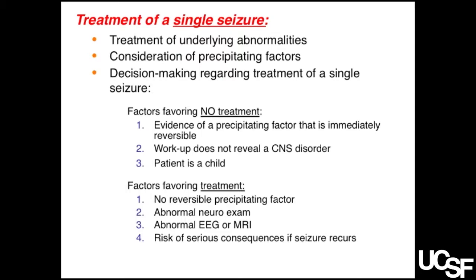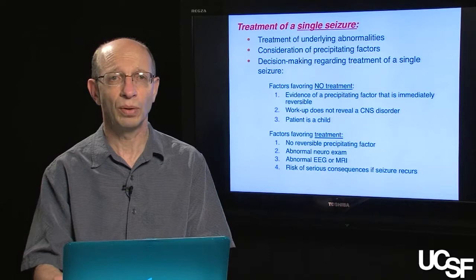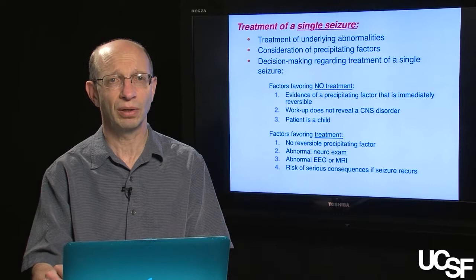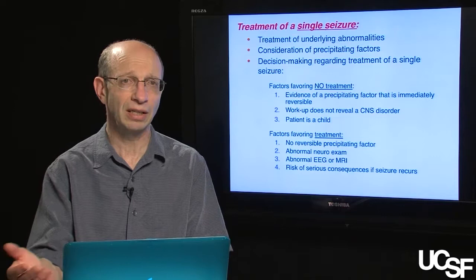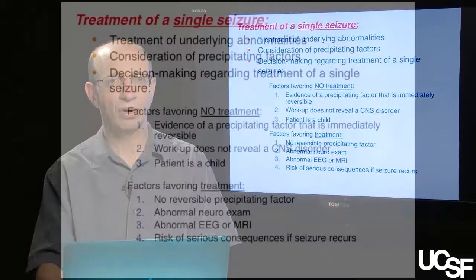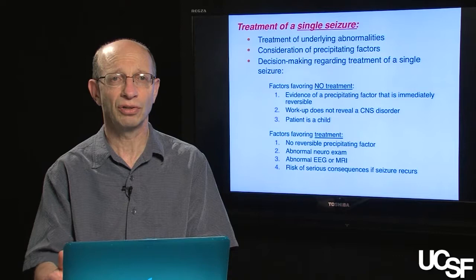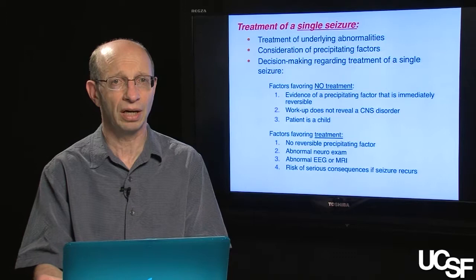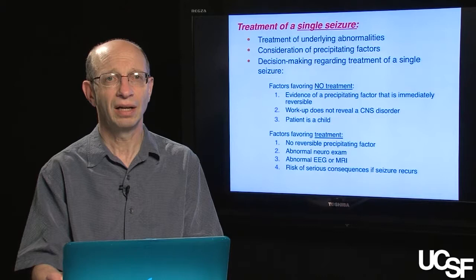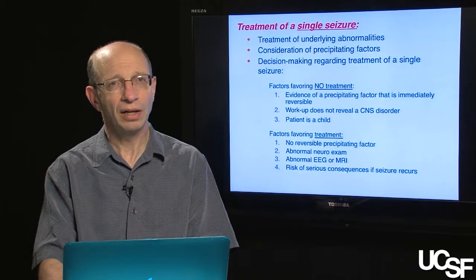Factors favoring treatment include: no reversible precipitating factor; an abnormality on the neuro exam suggesting a focal lesion in the brain — whether or not detected on imaging — raising concern that a fixed lesion will keep the patient susceptible to additional seizures; an abnormal EEG or MRI providing further evidence of a focal brain abnormality. Finally, there are individuals where there's a risk of very serious consequences if the seizure recurs — for example, someone in a job setting with absolutely no tolerance for a second seizure — and after careful discussion, you might decide it's worth starting anti-epileptic drugs even after a single seizure.